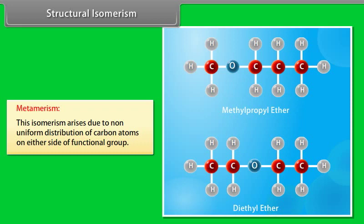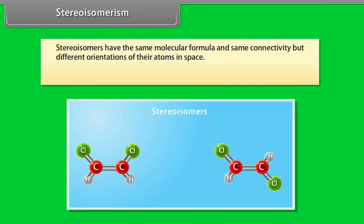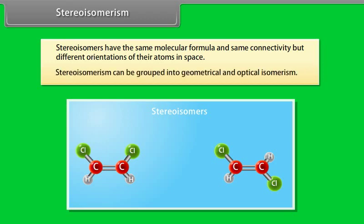Examples of metamerism include methylpropyl ether and diethyl ether. Stereoisomers have the same molecular formula and same connectivity but different orientations of their atoms in space. Stereoisomerism can be grouped into geometrical and optical isomerism.